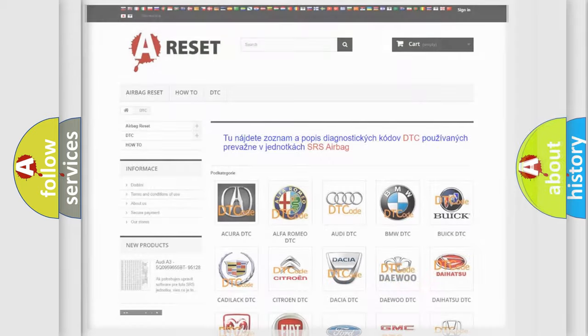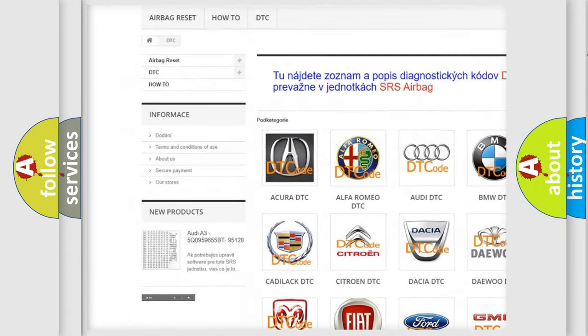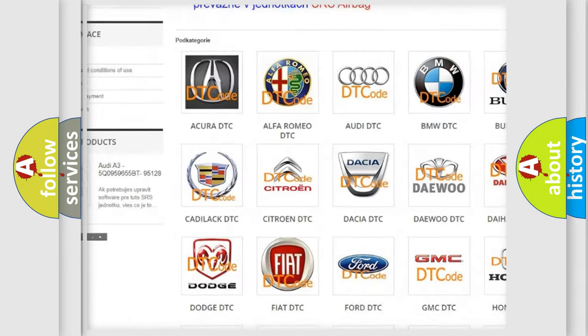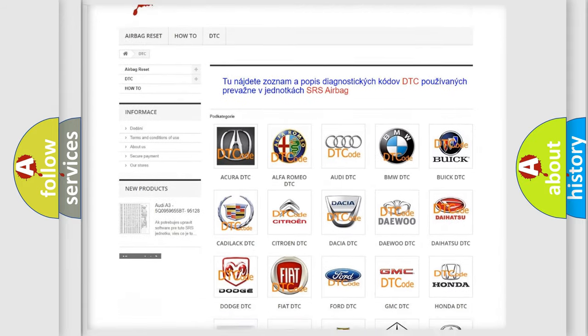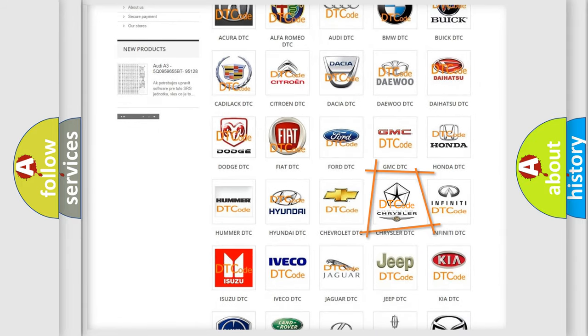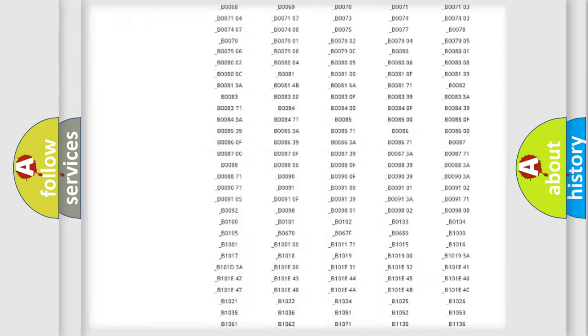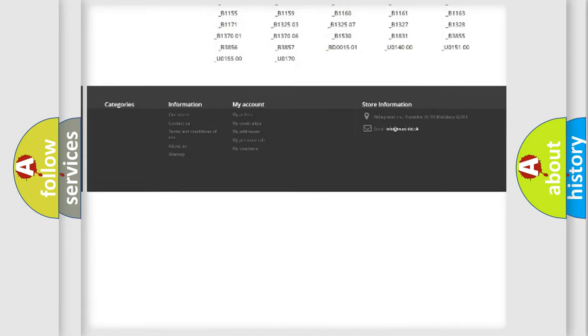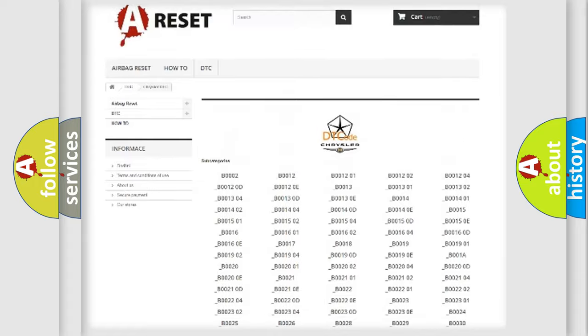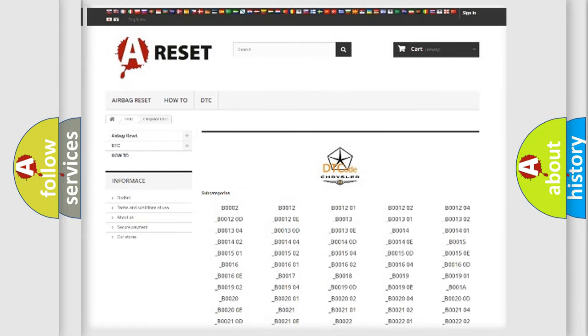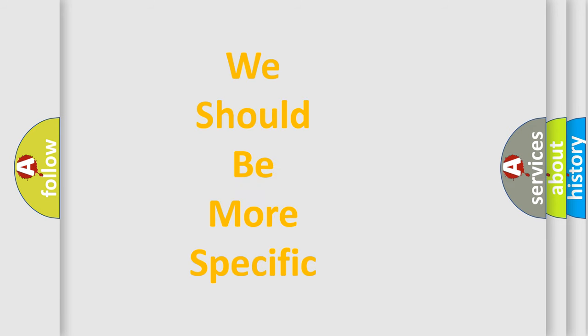Our website airbagreset.sk produces useful videos for you. You do not have to go through the OBD2 protocol anymore to know how to troubleshoot any car breakdown. You will find all the diagnostic codes that can be diagnosed in Chrysler vehicles. Also many other useful things. The following demonstration will help you look into the world of software for car control units.